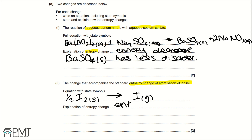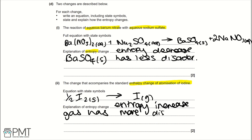Entropy in this case is going to increase because we're forming more gaseous molecules. Gas has more disorder - that would be our explanation. To get the two marks, you need the correct equation and the correct explanation: entropy increases and gas has more disorder.